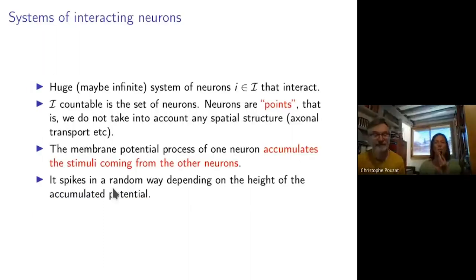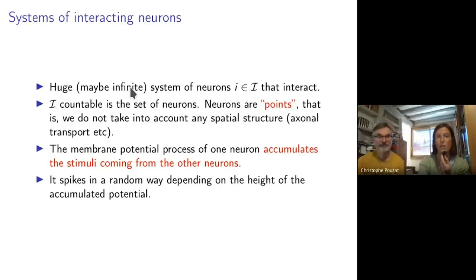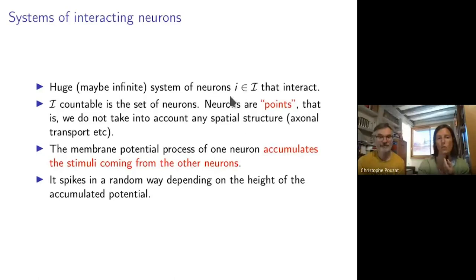So it's point process models, and we are able to deal with a huge system of neurons — it can even be infinite, which is nice for mathematicians and also for neurobiology because the brain is indeed huge. I give them a name: they are called little i, in a certain index set — the set of neurons. For me, neurons are points. I don't take into account any spatial structure, no external transport, anything. It's a point. And I will only describe the spiking times of all neurons in these huge systems.